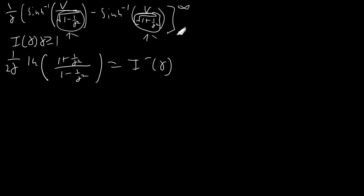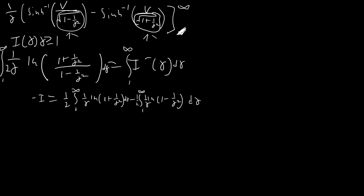Now we integrate both sides from 1 to ∞. On the left side this gives I(∞) − I(1). Since I(∞) = 0, this is just −I(1) = −I. So we need to evaluate the integral of (1/(2γ)) × ln((1+1/γ²)/(1−1/γ²)) dγ from 1 to ∞. We'll split it into two integrals and use power series to handle them.